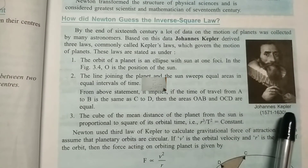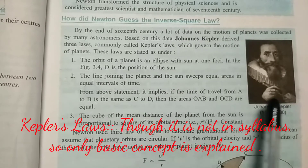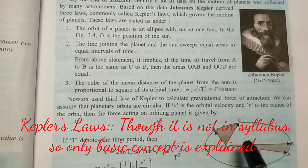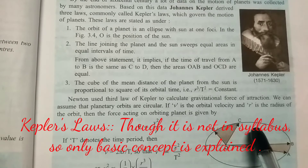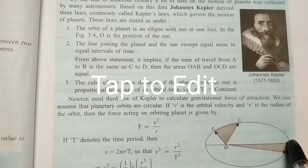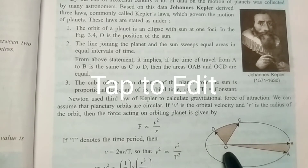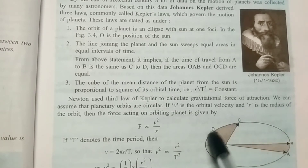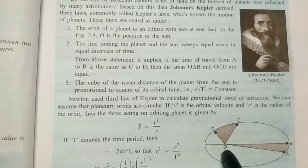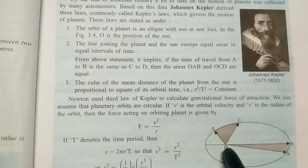Kepler gave three laws regarding planetary motion. According to Kepler's first law, the orbit of a planet is an ellipse with the Sun at one of the foci. In the case of an ellipse there are two foci — one here and one here. Out of these two, you consider any one as the position of the Sun.